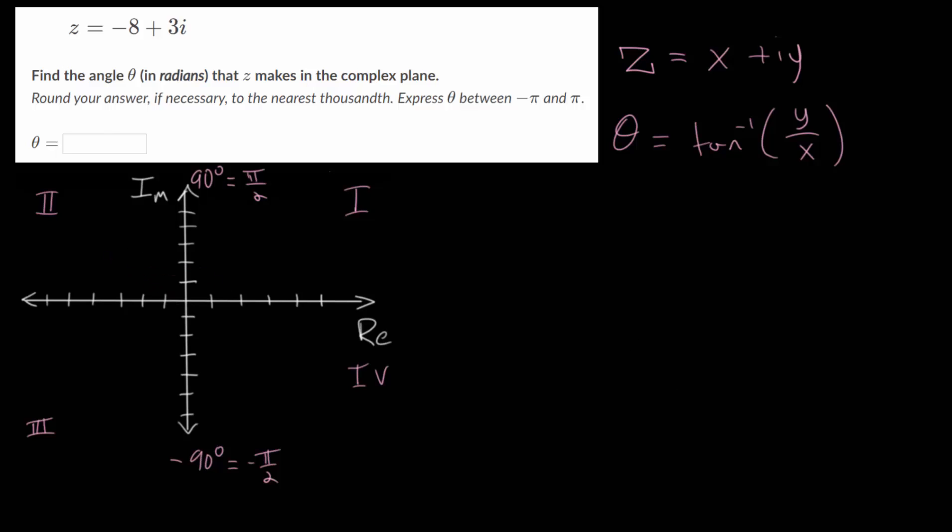So let's start by first plotting this complex number. And it has a real part of minus 8, and we will use a scale of 2 for the x values. So this right here will be minus 8, and for the y values, we can use a normal scale of 1. So this will be at 3i. So our complex number is right here. And we can draw a line connecting that complex number to the origin, essentially creating the vector for this complex number.